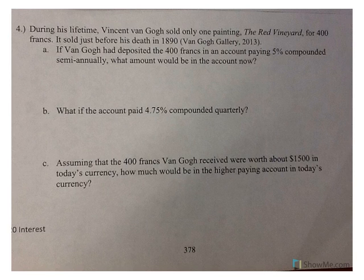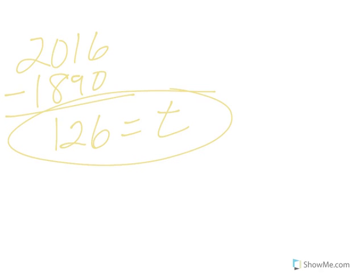Okay, so, here's my rate. Here's my principal. We're talking about semi-annually, which means N is 2. And, let's talk years. Okay, so, we are in the year 2016. He did all that in 1890. So, we are talking a difference of 126 years. So, T would be 126.